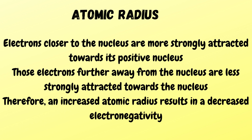Atomic radius: electrons closer to the nucleus are more strongly attracted towards its positive nucleus. Those electrons further away from the nucleus are less strongly attracted. Therefore, an increased atomic radius results in a decreased electronegativity.